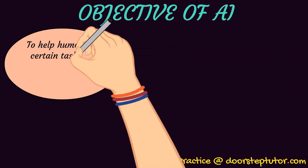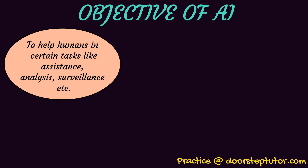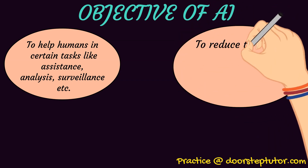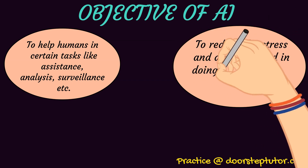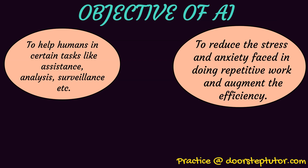Now, what are the objectives of AI? First, to help humans in certain tasks like assistance, analysis, surveillance, etc. Assistance means providing a certain service — for example, Alexa provides the service of listening to us and then giving a specific result. Second, to reduce the stress and anxiety faced in doing repetitive work. There are many repetitive jobs like clerical jobs or parts-fixing jobs in the automobile industry — these are mostly handled by AI.